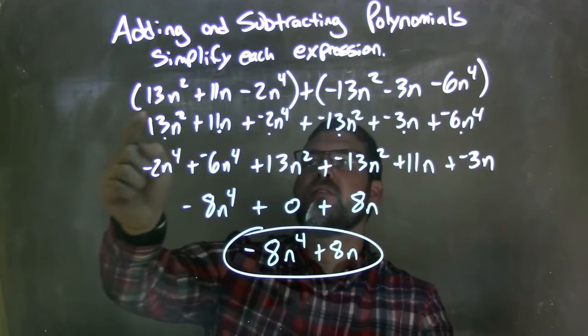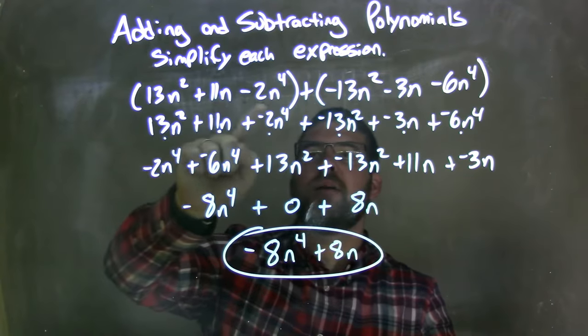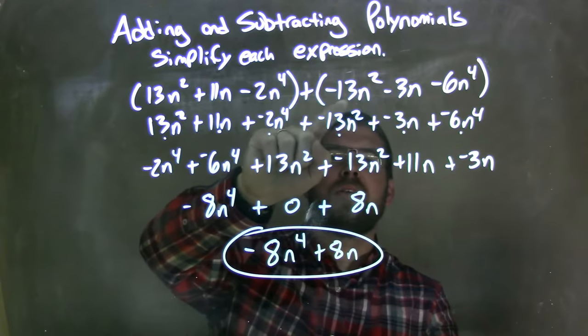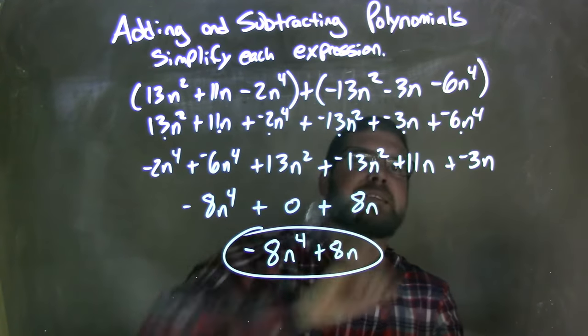So let's recap. We're given our parentheses here. 13n squared plus 11n minus 2n to the fourth. Plus parentheses negative 13n squared minus 3n minus 6n to the fourth.